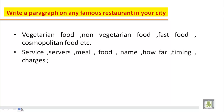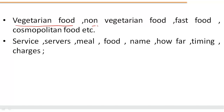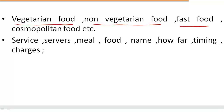As we have been discussing in all the units, before we write any paragraph, any article or anything, we need to have ideas with us. Without ideas, we cannot progress. Ideas give us a way — how to begin, how to go about. Since we have to write this paragraph on any famous restaurant in your city, let us discuss the ideas. One idea is the food — whether it is vegetarian food or non-vegetarian food, fast food or cosmopolitan food, what kind of food the restaurant sells.